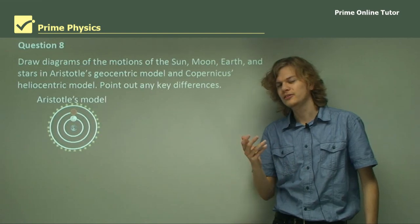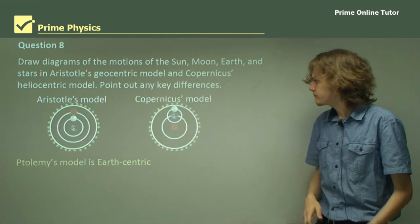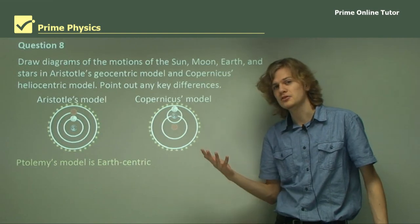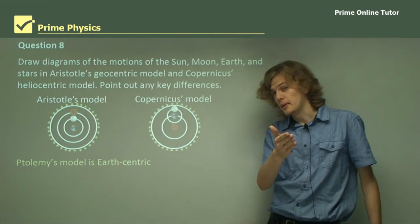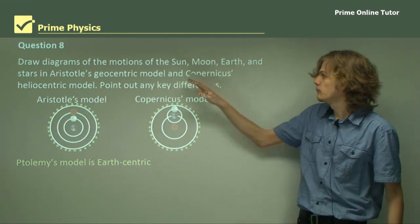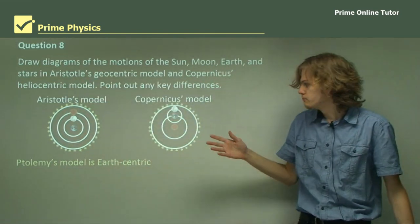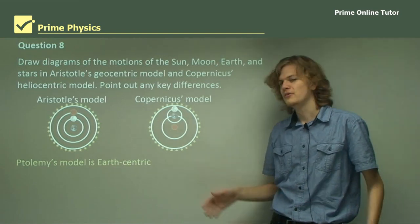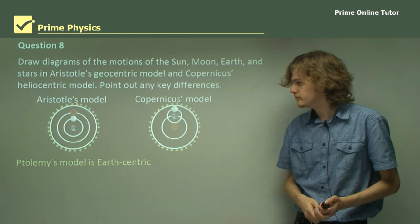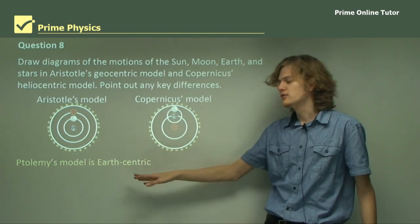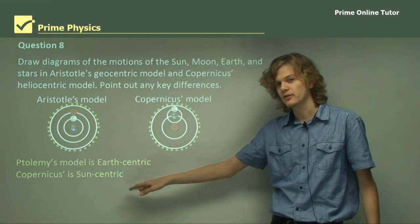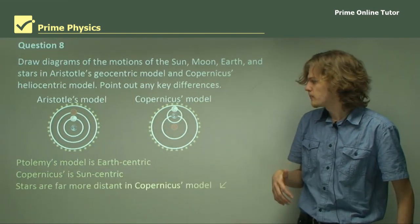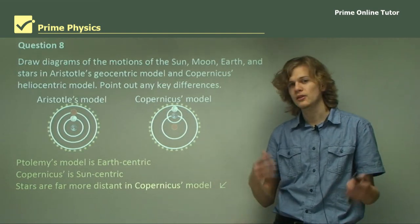Copernicus's heliocentric model looks a little different. In his model, the Moon is still orbiting the Earth — it doesn't have any epicycles — and the Earth is orbiting the Sun, which is why it's called the heliocentric model. He also thought the stars were just a single sphere all the way out at the edge, but he thought they were a lot further away, which explained the lack of parallax shift. A key difference is that Ptolemy's model is earth-centric or geocentric, while Copernicus's model is sun-centric or heliocentric. The other big difference is that stars are more distant in Copernicus's model, which explains the lack of parallax shift.